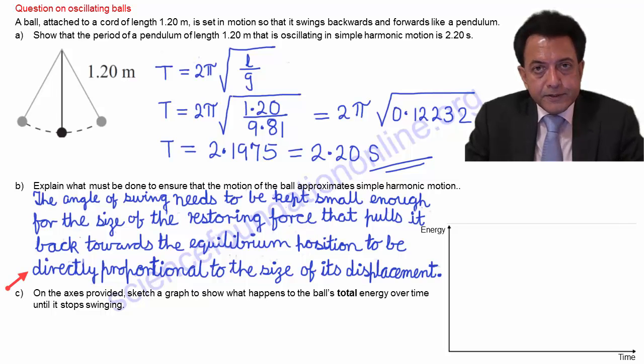Part C asks us to sketch what happens to the ball's total energy over time until it stops swinging. While it oscillates, the ball gradually loses energy as a result of the friction due to collisions with air molecules while swinging.